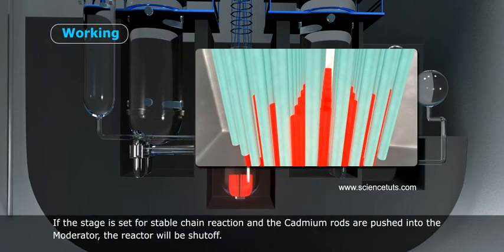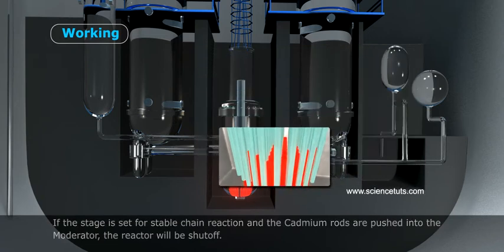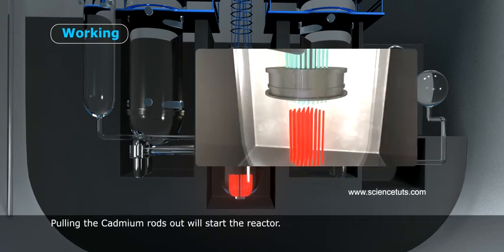If the stage is set for stable chain reaction and the cadmium rods are pushed into the moderator, the reactor will be shut off. Pulling the cadmium rods out will start the reactor.